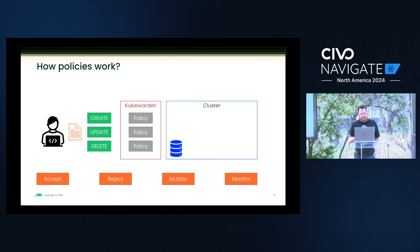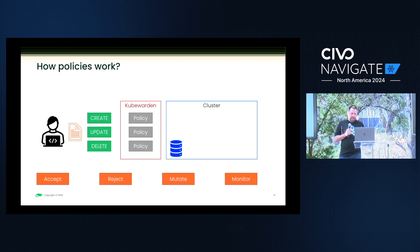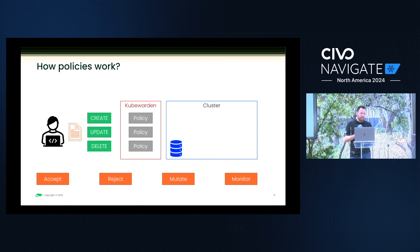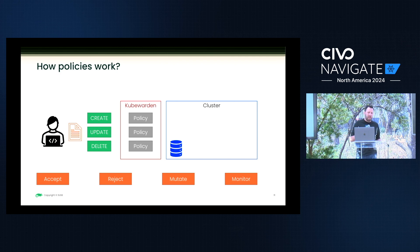You can accept, reject, or use the relatively new functionality called mutate. The best way to think about mutating: if you have a policy that says you cannot over-provision a pod and you want to set limits, you can allow mutate — it will log what it's doing and then mutate the request to bring it down to acceptable criteria.